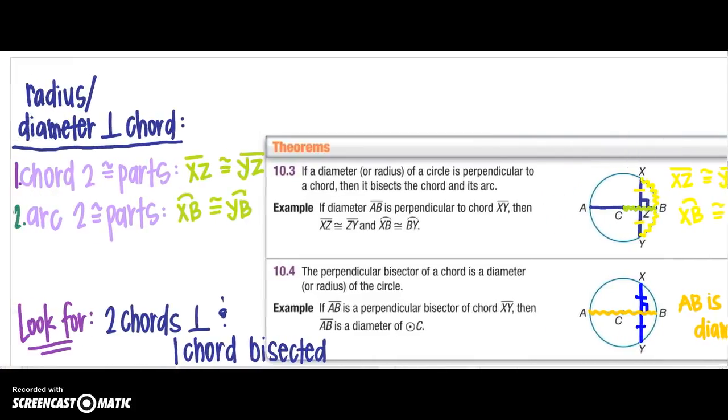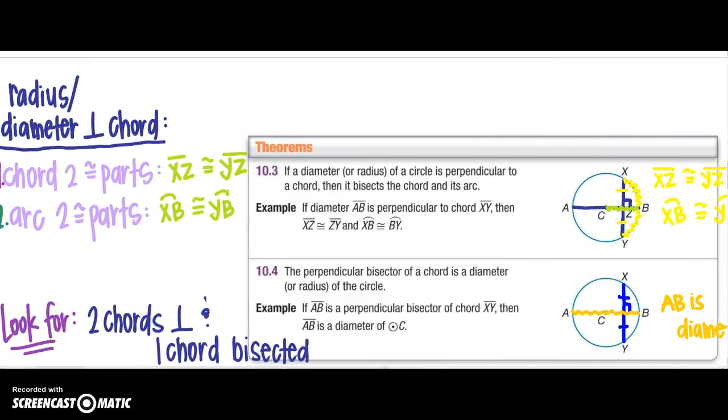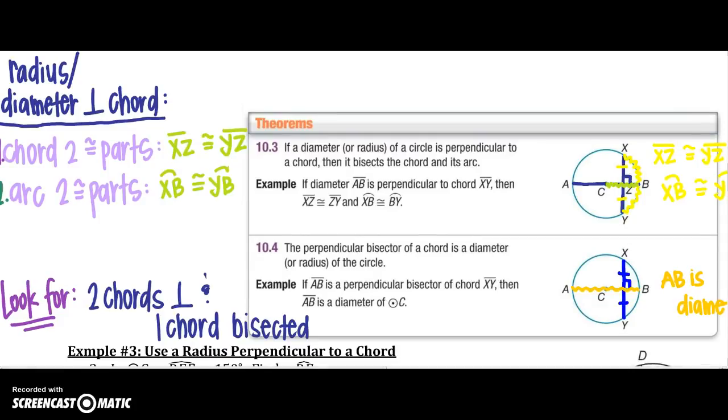All right, so what do I need to look for? I need two chords that are perpendicular. So since I know that AB is perpendicular to XY, I know that one chord is bisected. Then the other chord, AB, would be my diameter. So the second chord, not the chord that's bisected, but the other one is going to be the diameter. So you're finding the diameter.